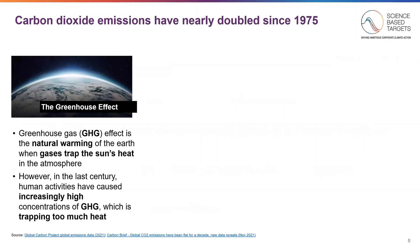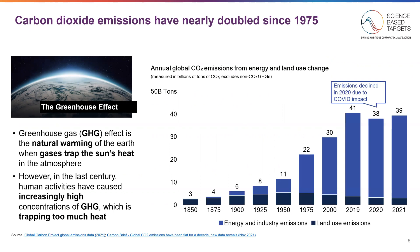The greenhouse effect sits at the heart of climate discussions. Greenhouse gases naturally warm the earth when they're trapped by the sun's heat in the atmosphere. However, over the last century, human activities have caused increasingly high concentrations of greenhouse gases, which is trapping too much heat. As you can see on the graph, which shows global carbon dioxide emissions from energy and land use, emissions driven by human activities have doubled since 1975. Despite the dip due to COVID-19, it is clear that dramatic action is needed to reduce emissions from business as usual.